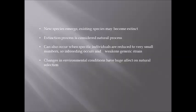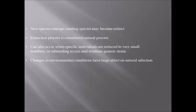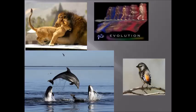Now we move on to new and existing species. In this process, new species may emerge and existing species may become extinct. The extinction process is considered to be a natural process. This may also occur when individual species are reduced to very small numbers, so therefore inbreeding occurs and weakens the genetic strain.